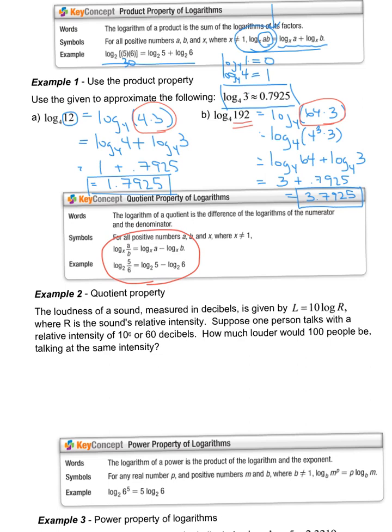In this question, we're looking at the loudness in basically a group of people. Our loudness equals 10 log base 10 of R. R being the sound relative intensity. Suppose one person talks with the relative intensity of 10 to the 6, or 60 decibels. We're going to use this 10 to the 6th in my question. At this point, we just need to plug in what we know. We have 10 log base 10 of R. Right now we're comparing 100 people talking at 60 decibels to one person talking at 60 decibels. So now we have log of a quotient.